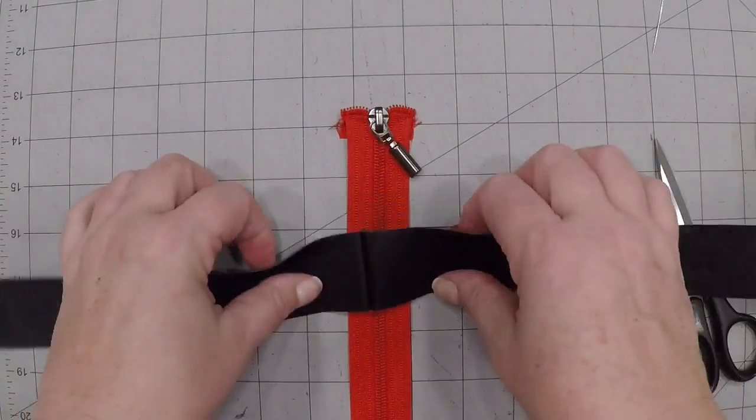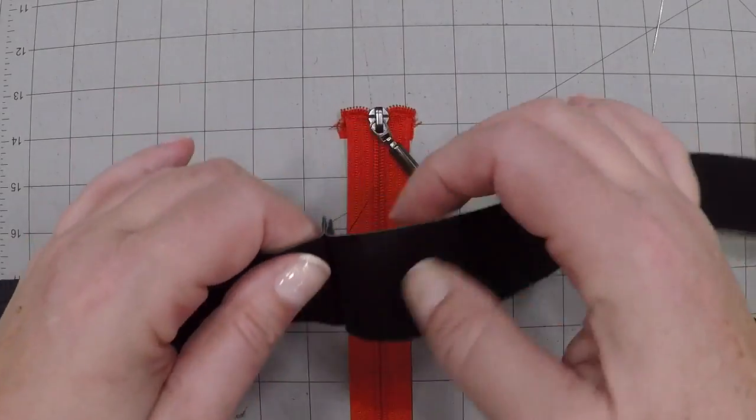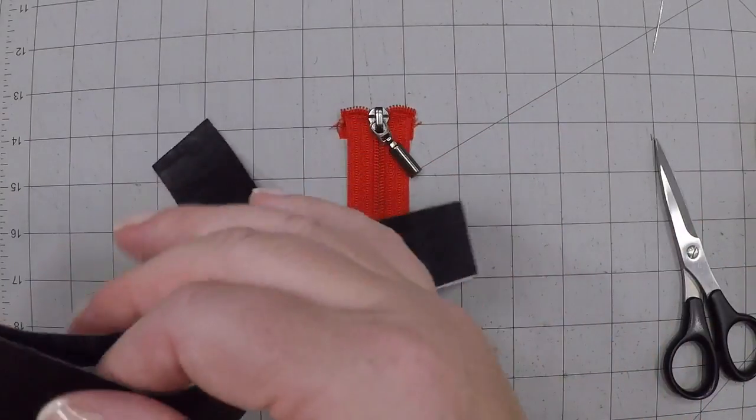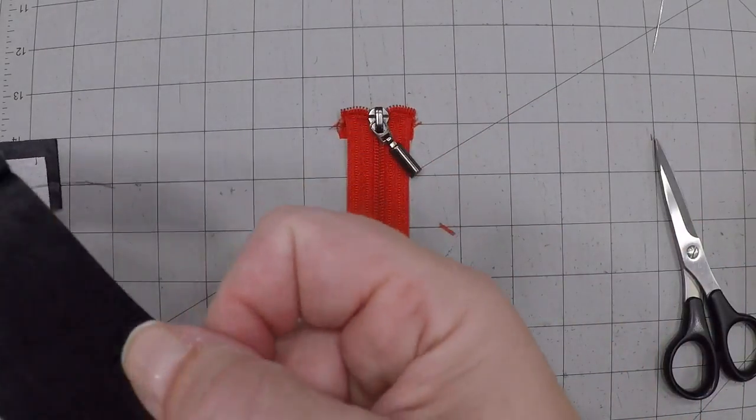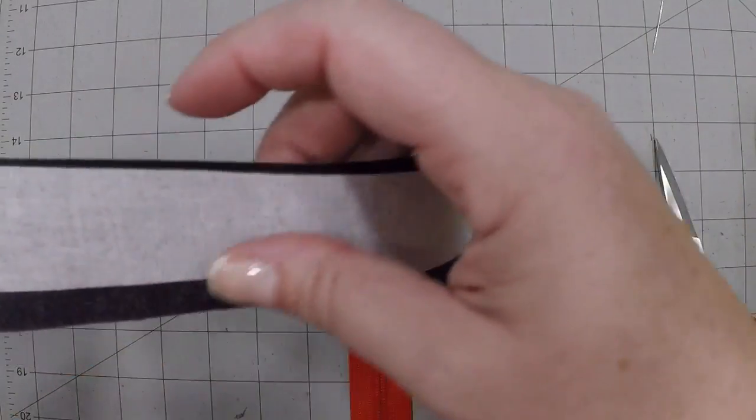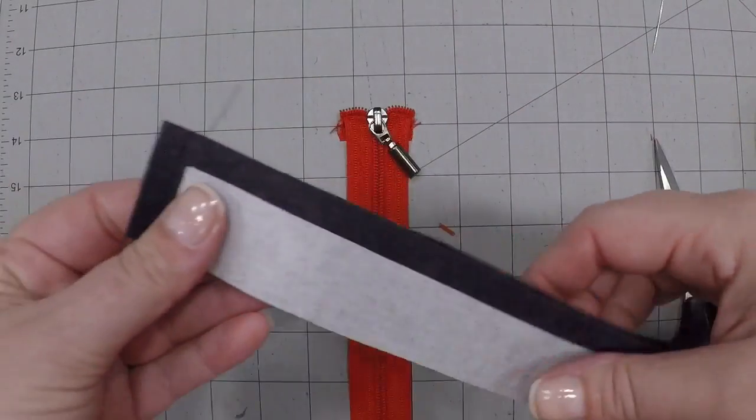I like to sew mine together first at a quarter inch. Fold this back. Sorry, I leave this this way. Get this flipped around.